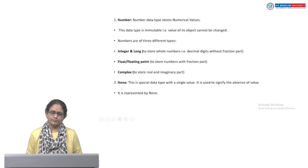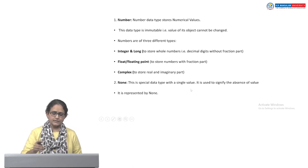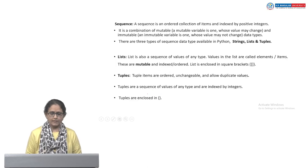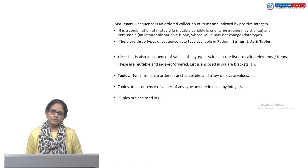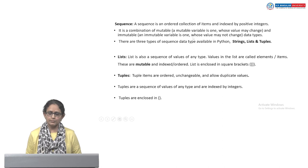Then we have None. None is a special data type. It represents the absence of value in a variable and it is represented by the None value. Then we have Sequences. Under Sequences, we have three things: Strings, Lists and Tuples. A Sequence is an ordered collection of items and indexed by positive integers.